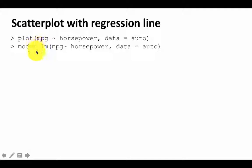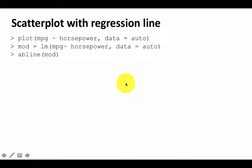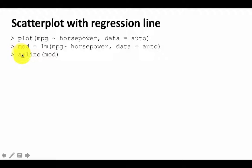I used equal to here; I could have used the more formal assignment operator less than dash. Nevertheless, the linear model is now available in the variable called mod. I can then use the function that adds a line on top of an existing plot. So I keep the scatter plot and on top of that add a line which represents this regression equation. That function is called the abline function.